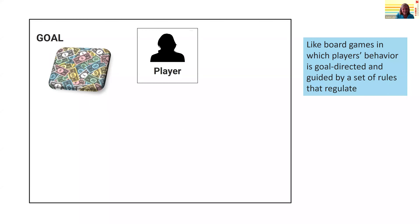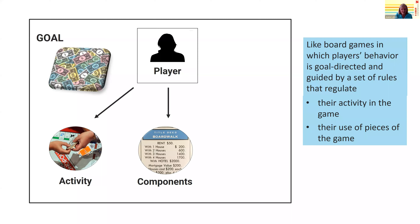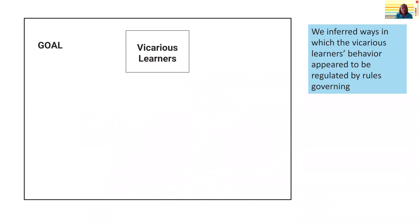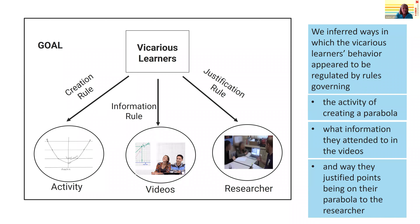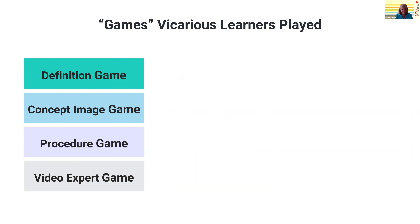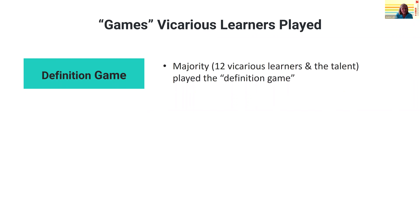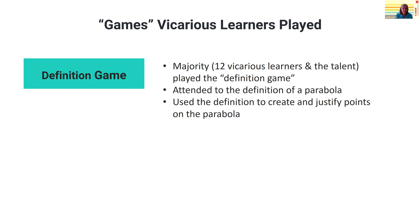We called them 'games' that the vicarious learners played, and we identified four of them. Those games had consequences for the problem-solving behavior of the vicarious learners. We adapted game board theory — like board games in which players' behaviors are goal-directed and guided by a set of rules that regulate their activity, their use of pieces, and their actions towards other players. We inferred ways in which the vicarious learners' behavior appeared to be regulated by rules governing the activity of creating a parabola, what information they attended to in the videos, and the way they justified points being on their parabola. The first game we called the definition game. The majority of vicarious learners played this game, as did the talent — they attended to the definition of the parabola in the videos and used that definition to create and justify points.